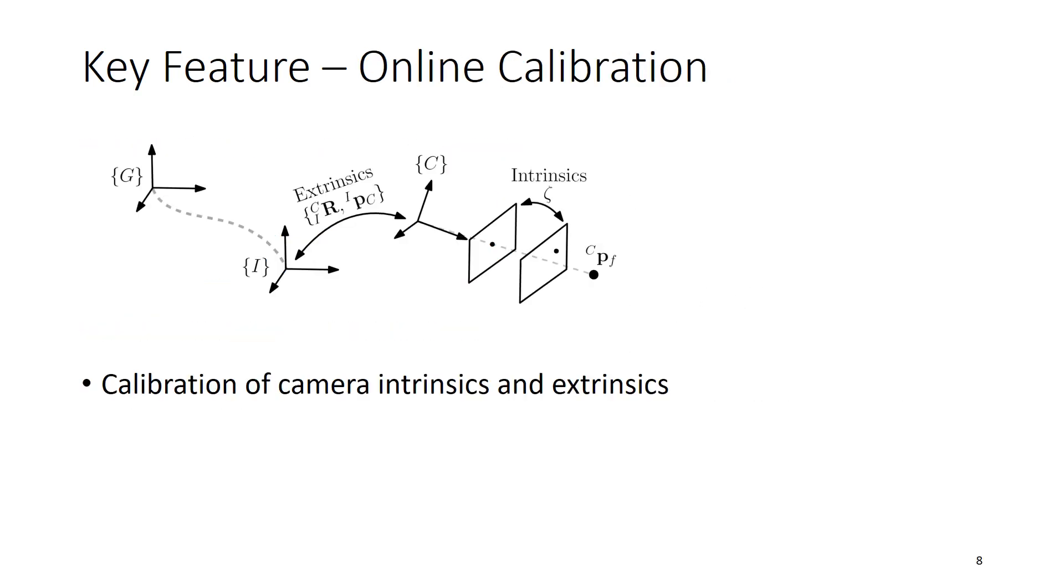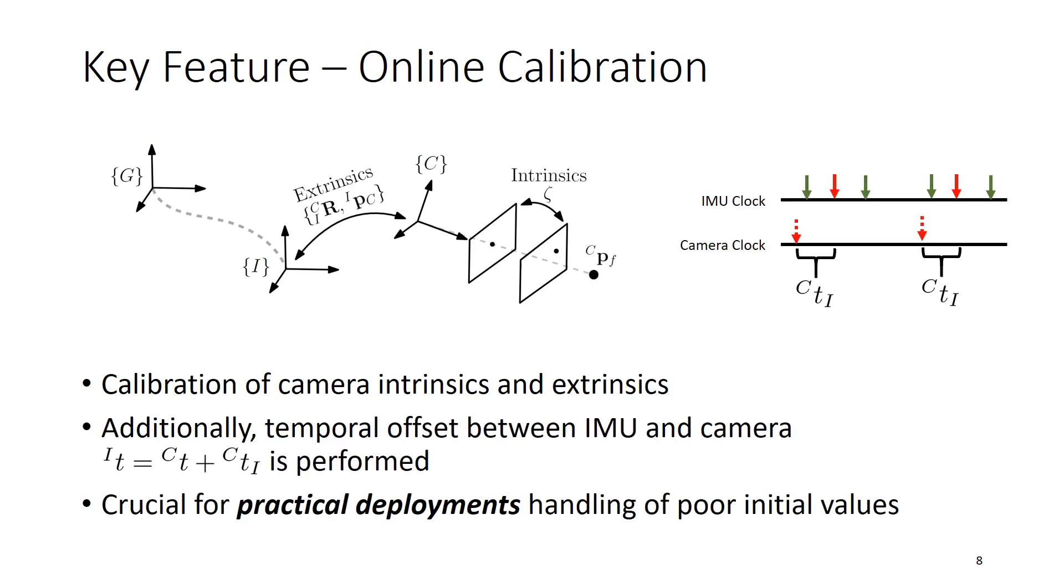Another key feature is the ability to perform online calibration. We have a very complete measurement model, so we can calibrate the camera intrinsics and extrinsics. Another important thing that we calibrate is the temporal offset between the IMU and camera. Both of these are very crucial for practical deployments and handling very poor initial calibration.